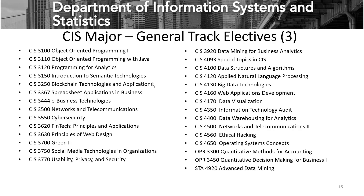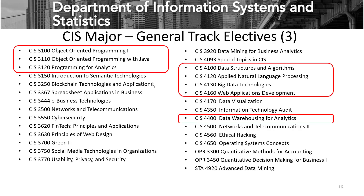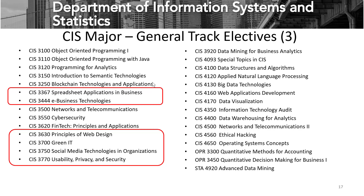Some of the electives tend to be more technical in nature — programming courses, data structures and algorithms, big data technologies, web application development, and data warehousing. A student who would like to challenge themselves with more technical coursework has that flexibility on the general track. On the other hand, some electives are slightly less technical, such as spreadsheet applications, e-business technologies, principles of web design, and social media technologies and organizations. The general track really gives a student the ability to customize the degree to suit their career goals or comfort level with technology.